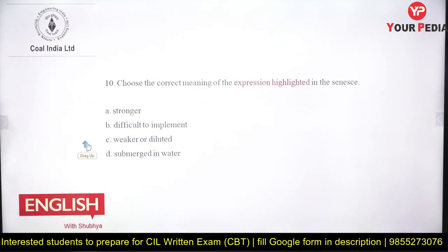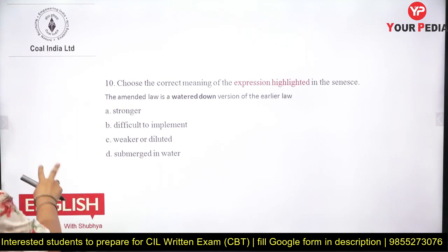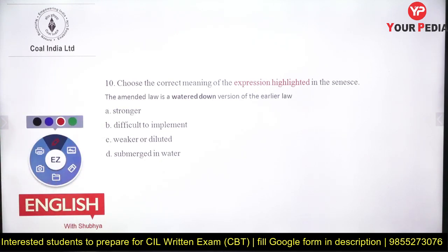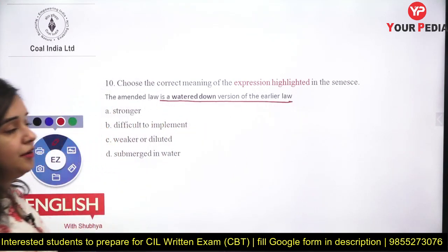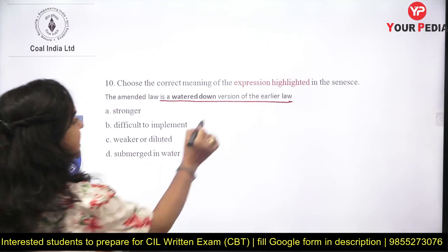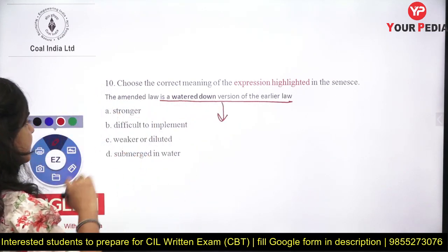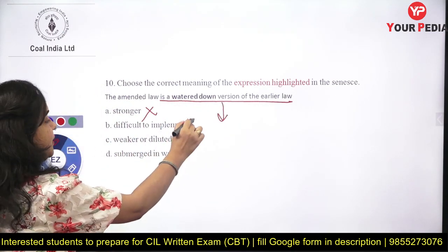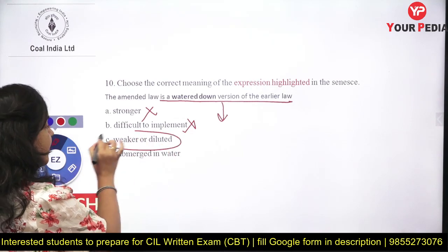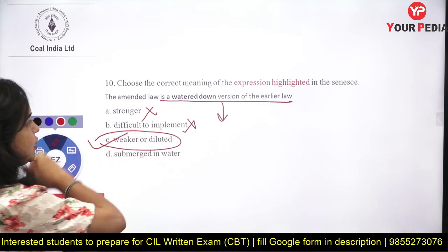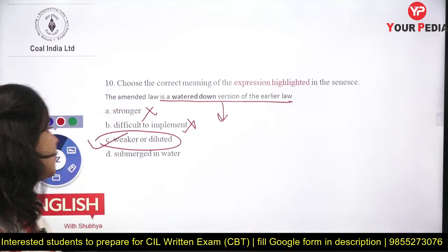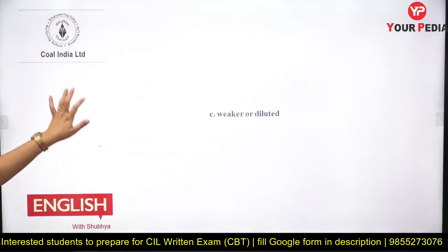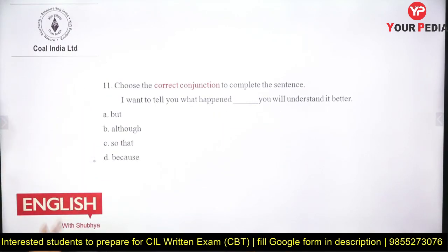Question ten asks for the meaning of the expression highlighted in the sentence: 'The amended law is a watered-down version of the earlier law.' Watered down means something of lower quality. Options: stronger, difficult to implement, or weaker/diluted. The answer is weaker or diluted — the amended law is a weaker version of the earlier law.